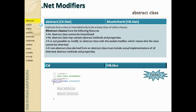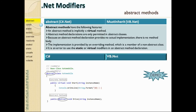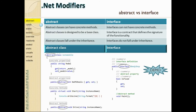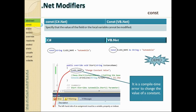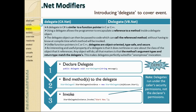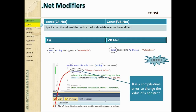In session 11, we covered many other modifiers in .NET. We did a deep dive into abstract classes, abstract methods, abstract properties, and abstract versus interfaces — a very important topic with live demos. We also covered constants. In the next session, we'll continue with events and delegates.